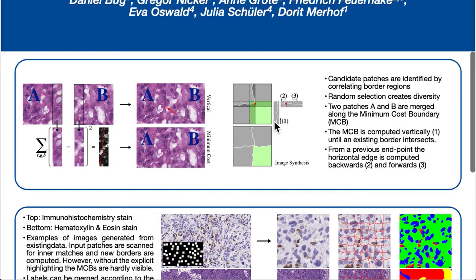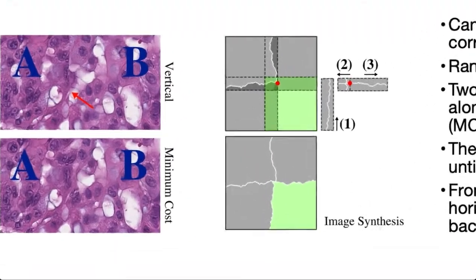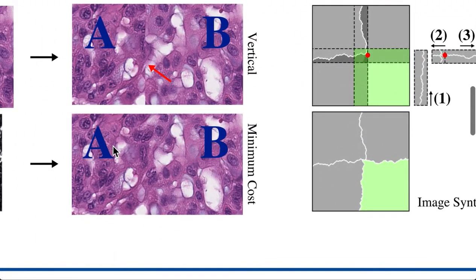So what is image quilting? Very briefly, it's a method to effectively combine two patches, here A and B, via a cost function minimizing a minimum cost boundary. This creates a rather invisible merger between the two image patches, so the boundary is invisible to the human eye.